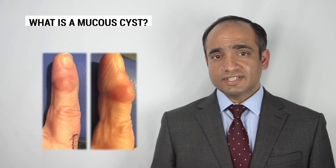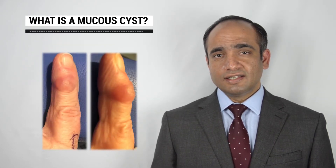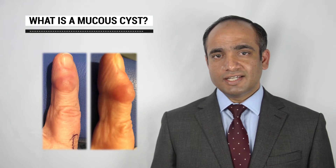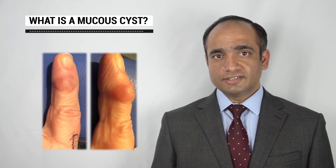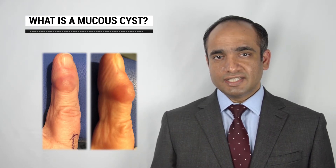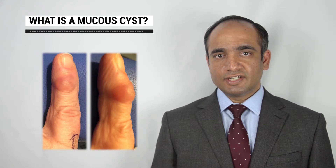This video is about management of ganglion cysts of the finger, which is also called a mucoid cyst or digital myxoid cyst. A mucoid cyst is a fluid-filled cyst that commonly affects the terminal joint of fingers, especially the index and the ring finger.